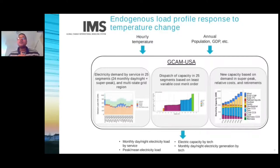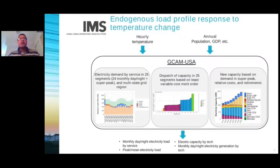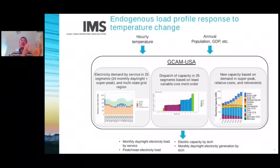The outputs from our improved model include monthly day and night electricity load by service, peak and mean electricity loads, electricity capacity by technology, and monthly day and night electricity generation by technology. As you can see, we have undertaken some improvements in the past years that push the boundaries in terms of what we've been doing so far in terms of power sector modeling within the GCAM team — trying to move from annual dynamics to more subannual and hourly dynamics.